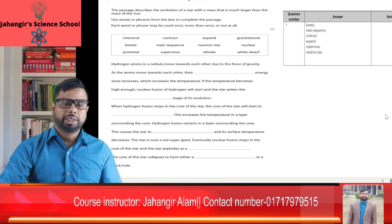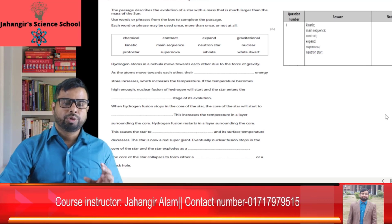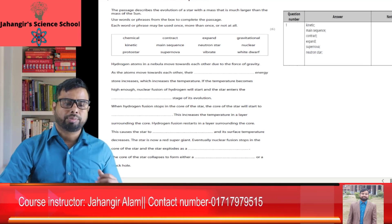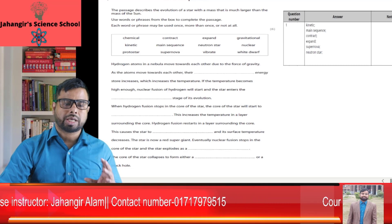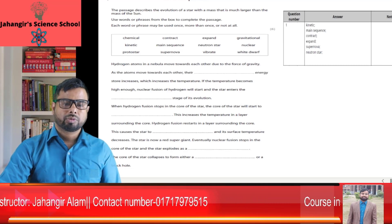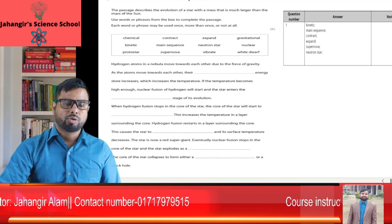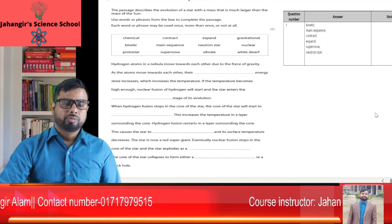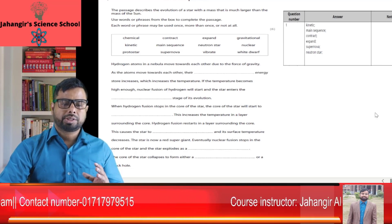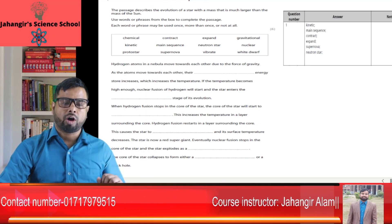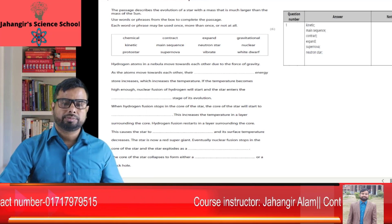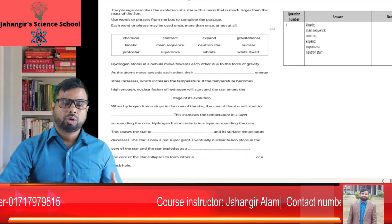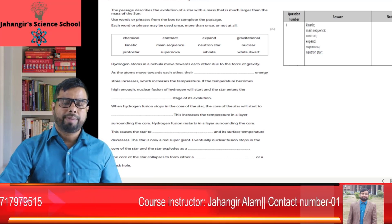Eventually, nuclear fusion stops in the core of the star and the star explodes as a supernova. The core of the star then collapses to form either a neutron star or a black hole.